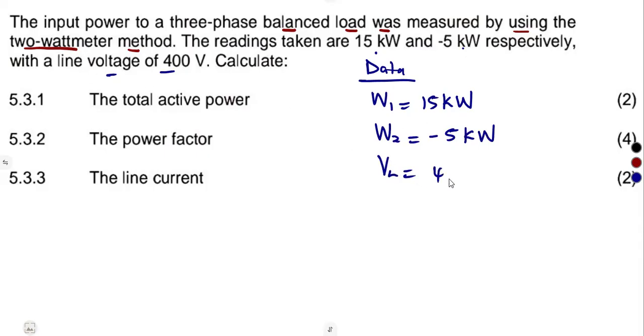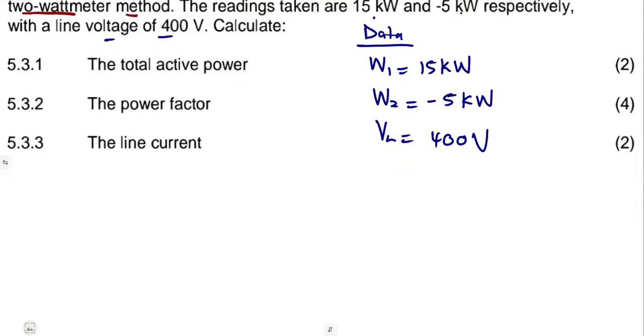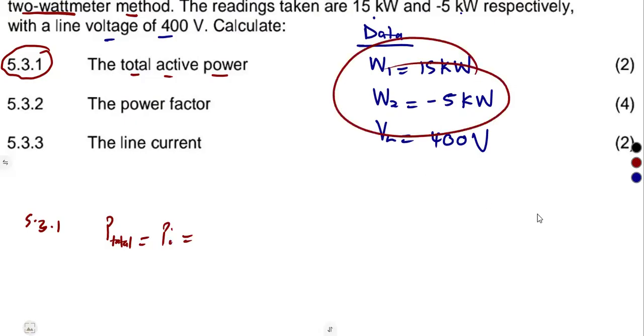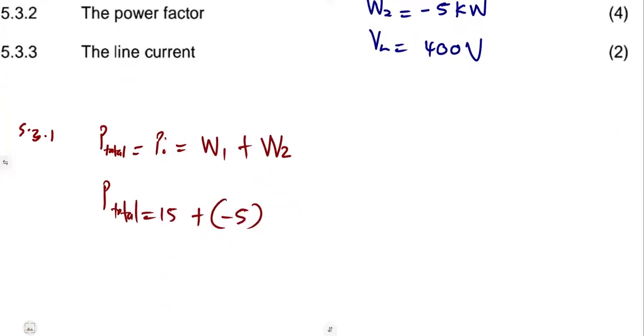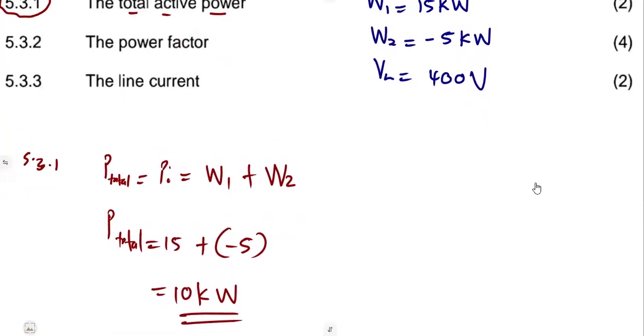The question was, 5.3.1, to calculate the total active power, the true power, which is from the wattmeters. Remember, for a two wattmeter, the total power is actually our input, P_in, which is the sum of the wattmeters: wattmeter one plus wattmeter two. So that was going to give us 15 plus negative 5, which gives us a positive 10. This is 10 kilowatts.